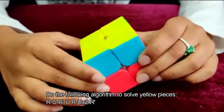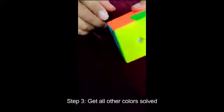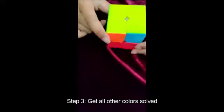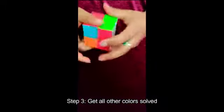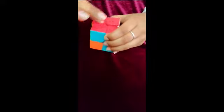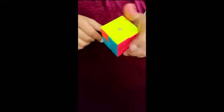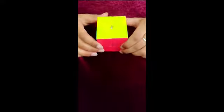So step three is to get the sides of the yellow solved. Like these two should be orange, these should be blue, and if you have any matching colors like this one and this one, you may turn it to make it matching. And if you don't, then you have to do the algorithm two times. If you have one, then you only have to do it one time.